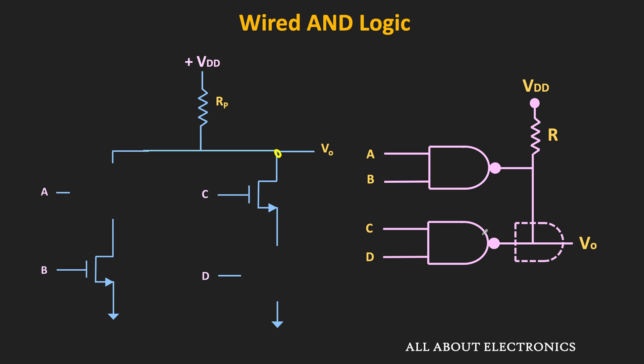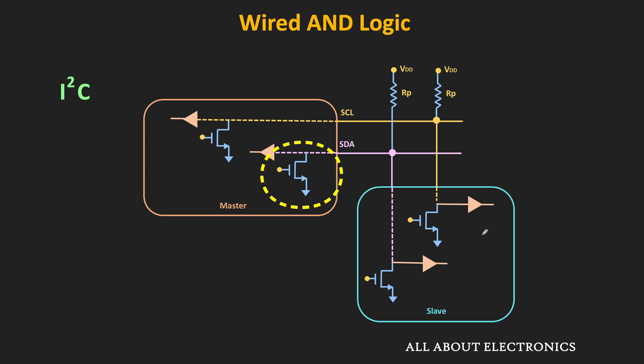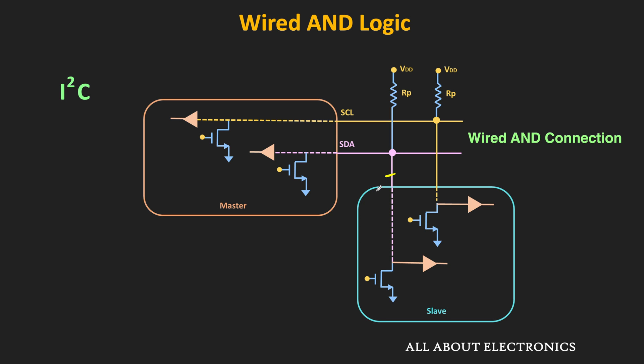Apart from logic gates, wired AND logic is also used in many communication protocols — for example, in the I2C and CAN bus protocols. In I2C, whenever a master wants to send data on the bus, it pulls down the SDA line to logic 0 by turning on its NMOS transistor. Even if the SDA outputs of other devices are logic high, the line is still pulled to logic 0. Once any device pulls the line low, it remains in that state, providing the wired AND connection used in I2C and CAN bus.